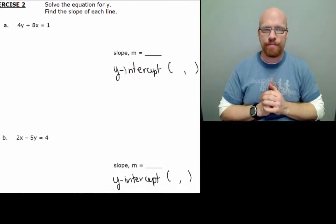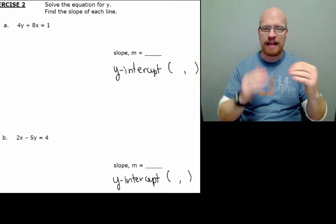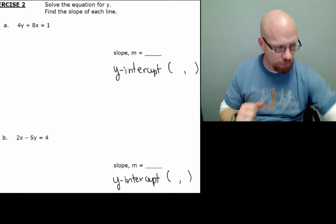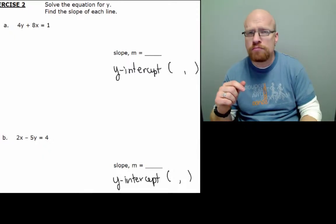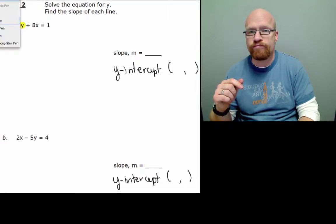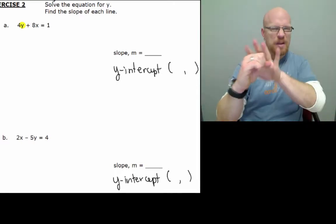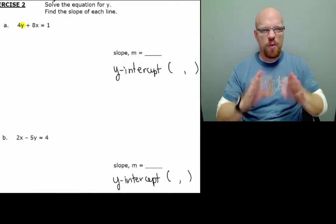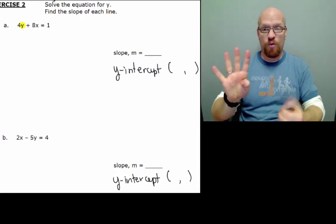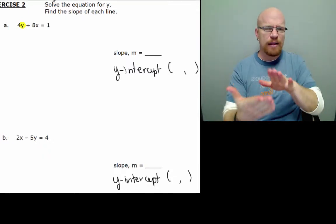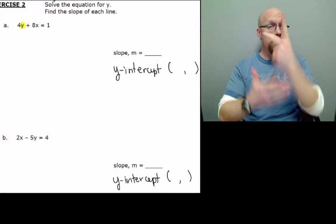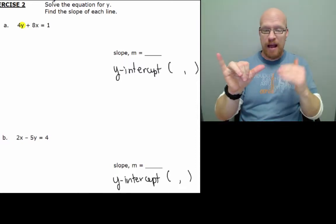Now for example a, we have 4y plus 8x equals 1. Well, I want to isolate my y, so for now I'm going to leave it there. Right now y is not alone. I have two things in my way: 8x and 4 with the y, the coefficient. The easiest thing to deal with right now is 8x. We can go ahead and subtract 8x, because negative is opposite of positive, from both sides to keep it balanced. And then we'll have 4y equals something.